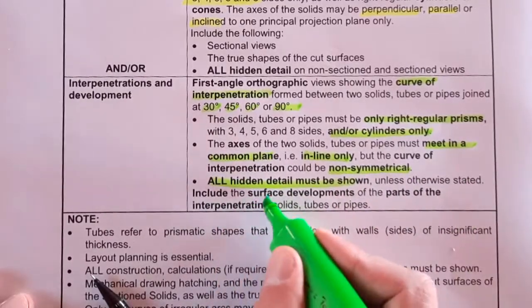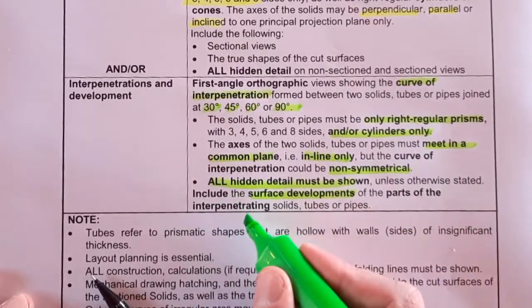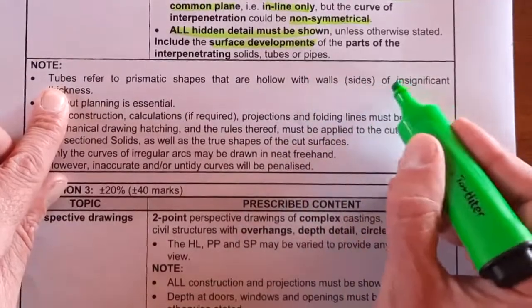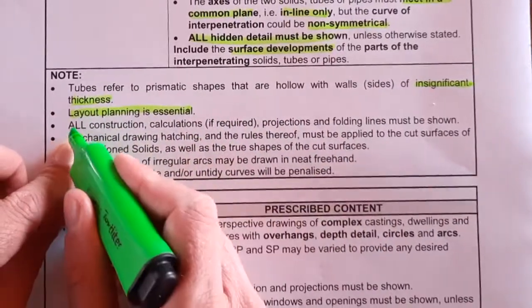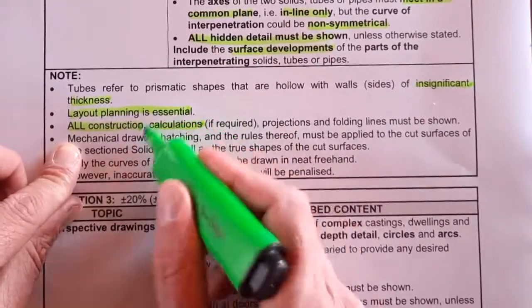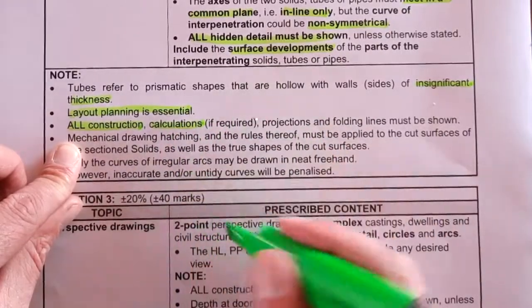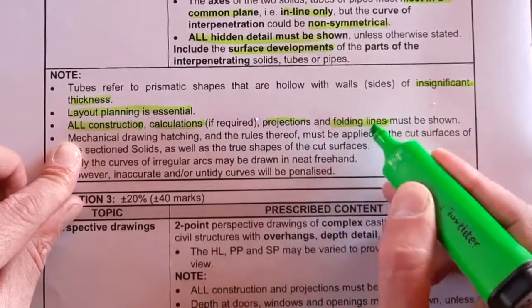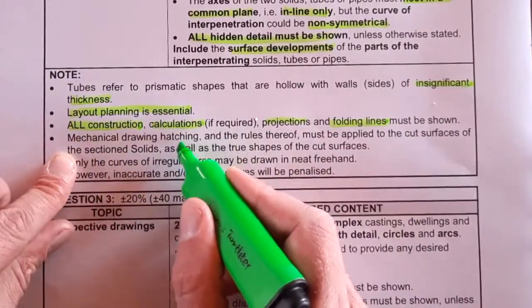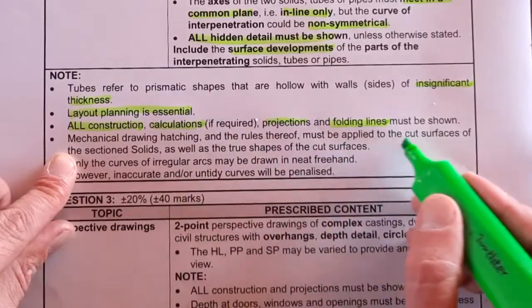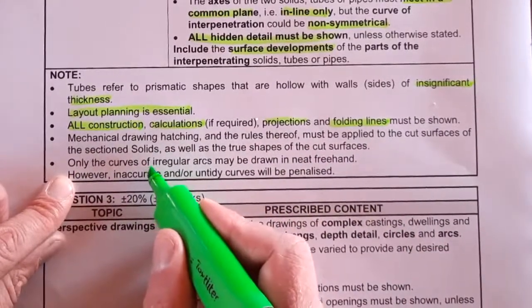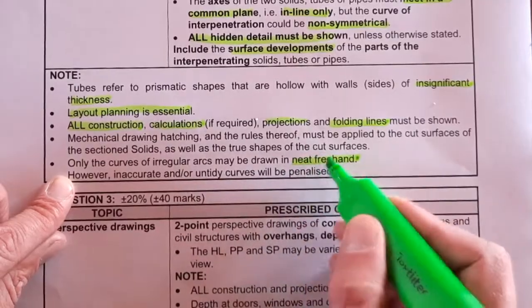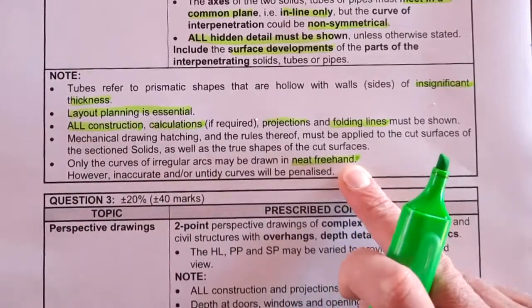The curve of interpenetration could be non-symmetrical, as you'll see in the example. All hidden detail must be shown unless otherwise stated. Include the surface development of the parts of the interpenetrating solids, tubes, or pipes. When they refer to tubes, the thickness of the sides is insignificant. You must plan your layout, show all construction and projections, and folding lines must be shown. Hatching is at 45 degrees. Curves of irregular arcs may be drawn neatly freehand, but ideally use a French curve if you have one.